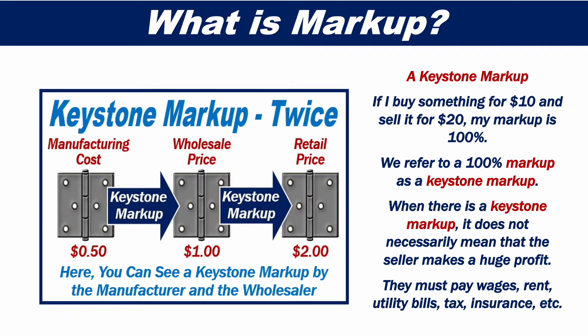A keystone markup. If I buy something for $10 and sell it for $20, my markup is 100%. We refer to a 100% markup as a keystone markup. When there is a keystone markup, it does not necessarily mean that the seller makes a huge profit. They must also pay wages, rent, utility, tax, insurance, etc.